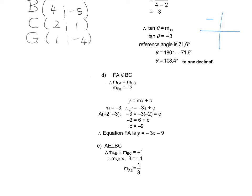Then in question 1D, we know for parallel lines the two lines will have the same gradient, and since the gradient of BC is minus 3, the gradient of FA must also be minus 3. We use the standard form y equals mx plus c, substituting m with minus 3. Then we use the coordinate on line FA, minus 2 and minus 3, to substitute x with minus 2 and y with minus 3 in order to solve c. Minus 3 times minus 2 is positive 6, and 6 taken to the other side becomes negative 6, and minus 3 minus 6 gives me c equal to minus 9. Therefore the equation of FA is y equals minus 3x minus 9.